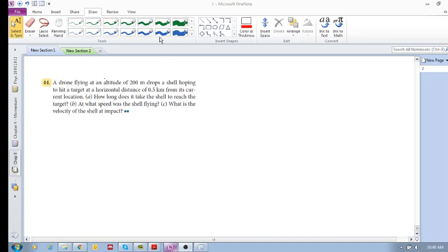Okay, so I know I don't do many of these. I will do more of these in due course before your exam. But here's a problem. Number 44 in chapter 10 in the questions and problems. A drone flying at an altitude of 200 meters drops a shell hoping to hit a target at a horizontal distance of half a kilometer from its current location.